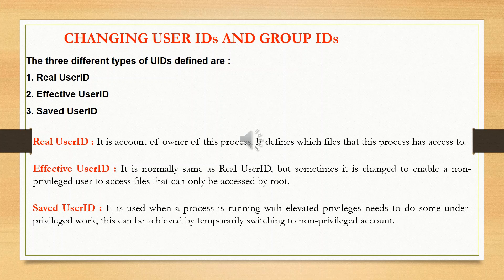For execution of those user IDs, the set user ID bit on or off should be considered. Real user ID is unchanged in both sections. Effective user ID is unchanged, but the saved set user ID is set equal to the set user ID of the program file — it is copied from the effective user ID during execution.